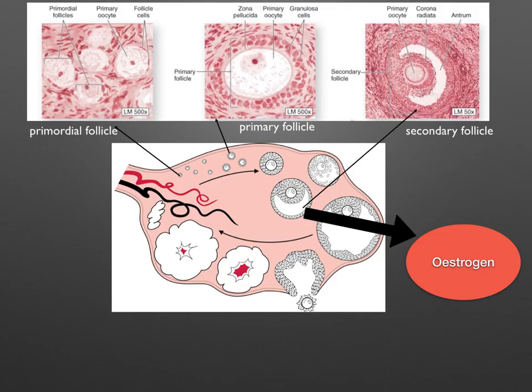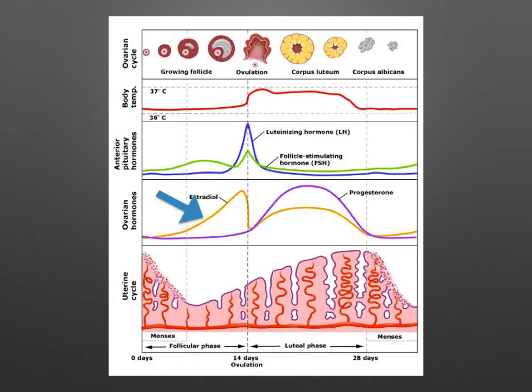LH from the pituitary gland stimulates the granulosa cells to secrete oestrogen — this is the follicular phase. Looking at the hormone diagram, notice how oestrogen, the yellow line, gradually increases as the granulosa cells secrete oestrogen. This phase lasts from about day 4 to day 11, and oestrogen levels reach maximum levels on day 11.